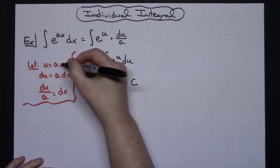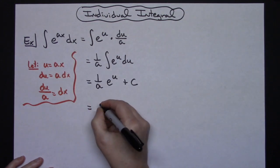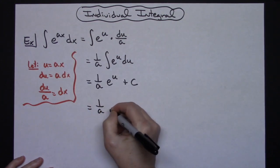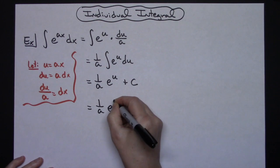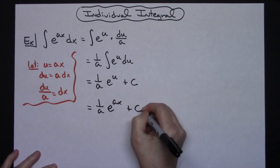At this point I can replace my u with what I originally said it was going to be equal to. So 1 over a e to the ax and then plus c.